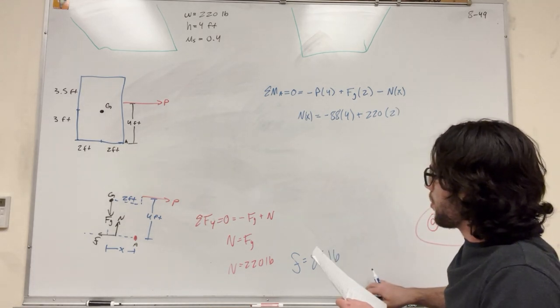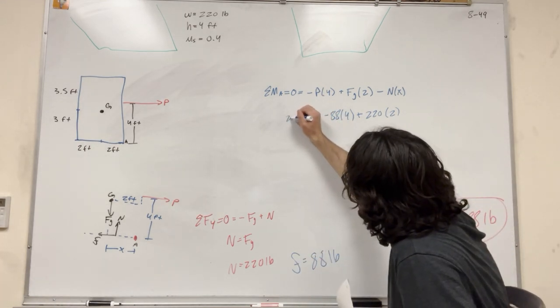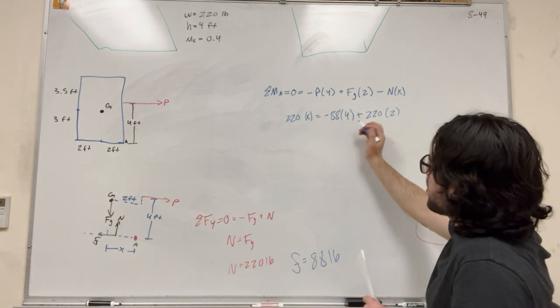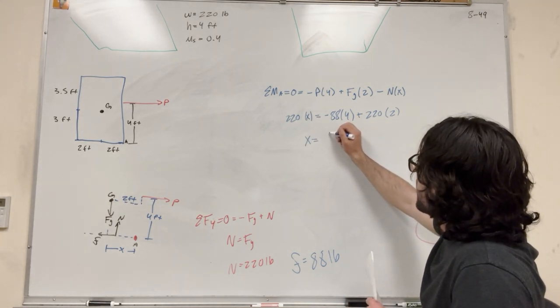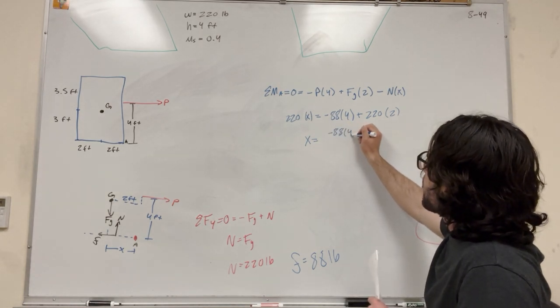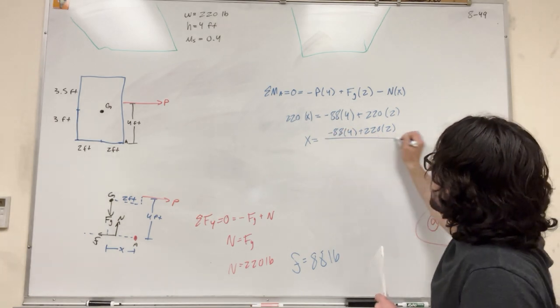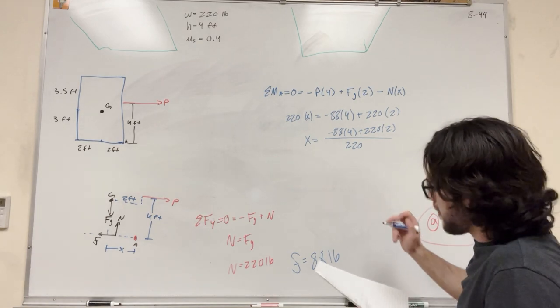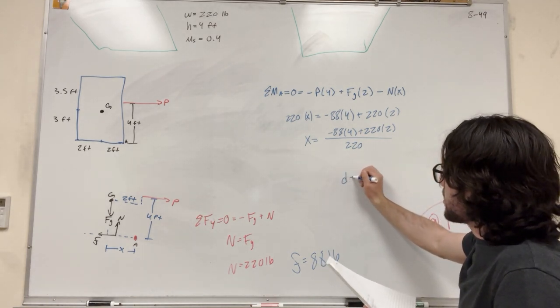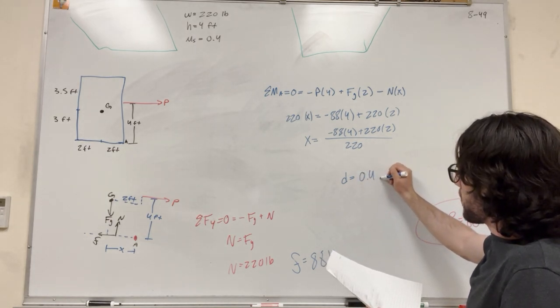So then, of course, we also have normal. So normal is what we found earlier. It's 220. So then all we needed to do was divide by 220. So X is equal to negative 88 times 4 plus 220 times 2 over 220. And then if you solve that, you're going to get X is equal to 0.4 feet.